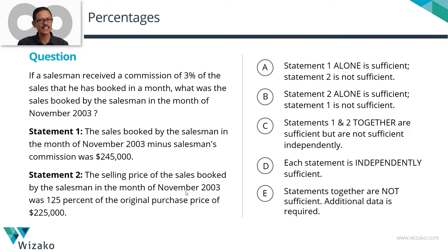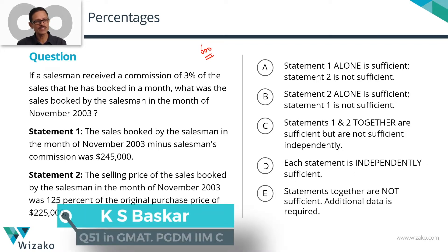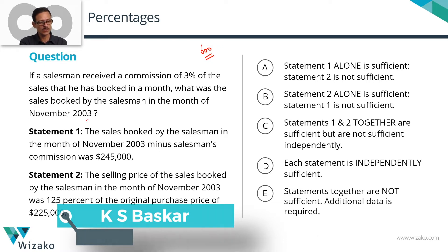This is an easy question, a GMAT data-sufficiency practice question. Classify this one as a 600-level question from the topic percentages. The salesman received a commission of 3% of the sales that he booked in a month. What was the sales booked by the salesman in the month of November 2003?